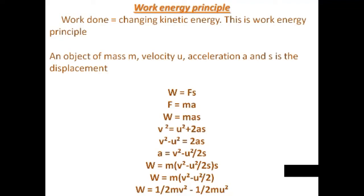For deriving the equation for the work-energy principle, first we consider an object of mass m, initial velocity u, acceleration a, and displacement s. W is equal to Fs is the equation for work. We consider Newton's second law of motion F is equal to ma, and the second equation of motion v square is equal to u square plus 2as. We apply both equations into W is equal to Fs, so W is equal to mas.